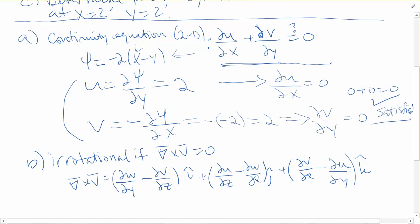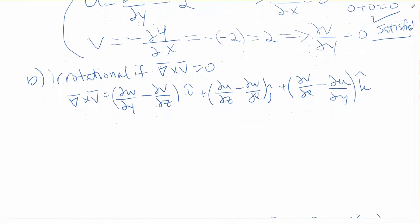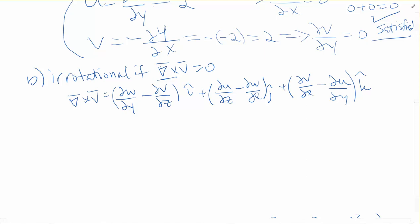That was part A. Next, we need to figure out if the flow is irrotational. To determine that, we compute the curl of the velocity vector. The curl of the velocity vector is the gradient crossed with the velocity vector, and it needs to equal 0 for the flow to be irrotational. I've written out the three components of the curl.